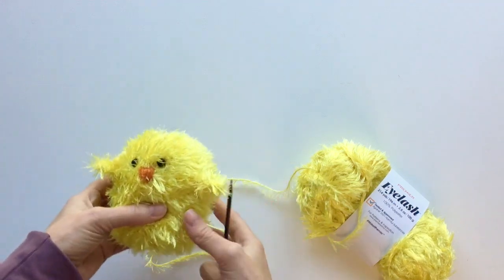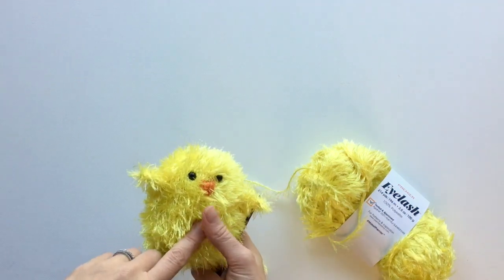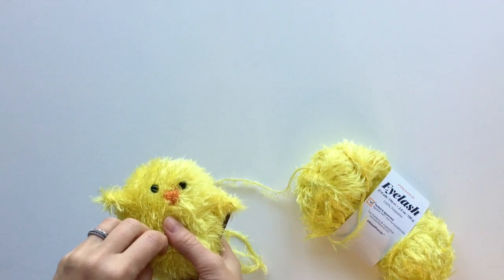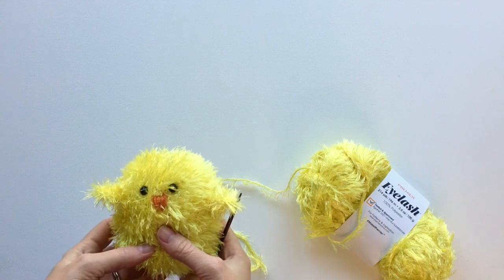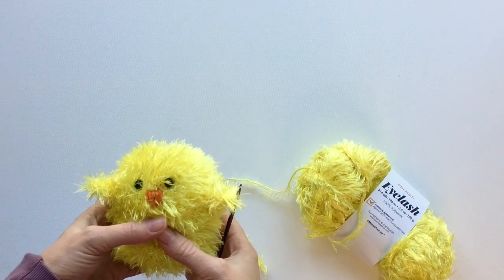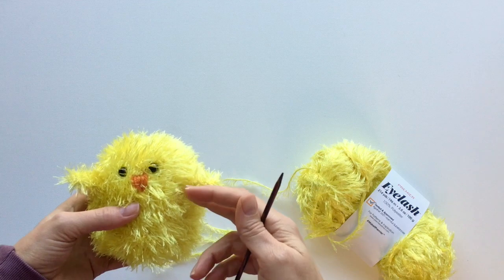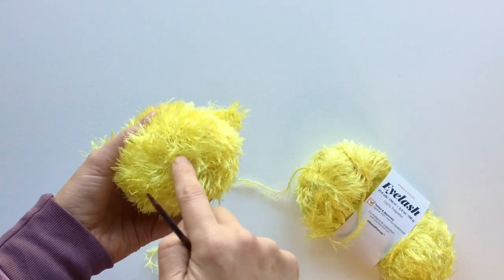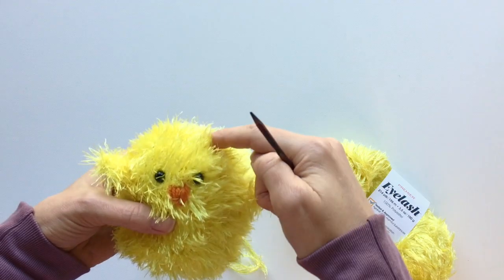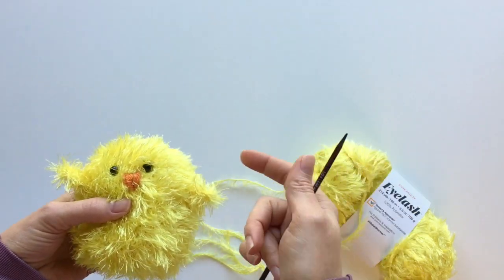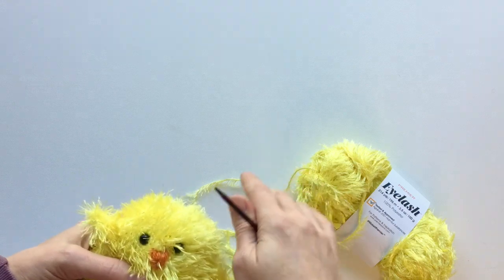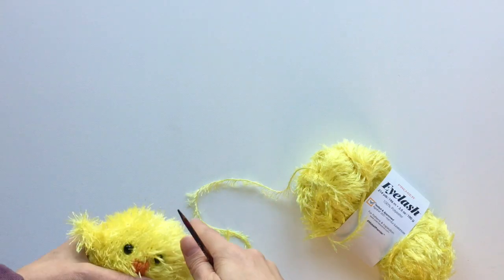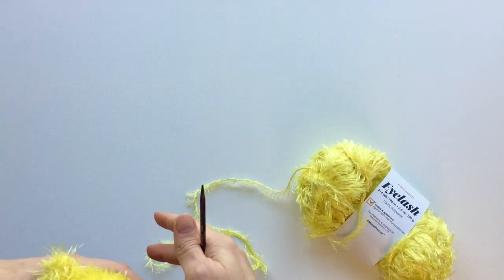All right, we're ready to get started. You can find the pattern for the fuzzy chick at www.premieryarns.com, and this chick is worked from the bottom up in the round. So we start here on the bottom and then work up in the round. I'm going to be using double pointed needles today, but you can use your preferred method for small circumference knitting in the round.